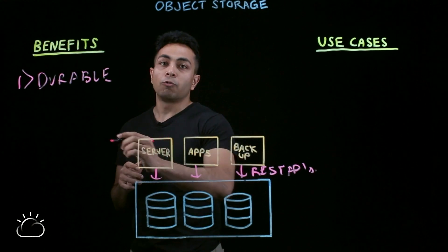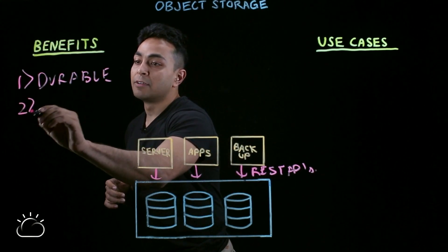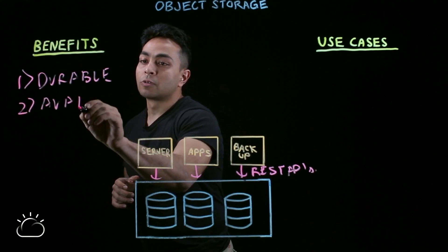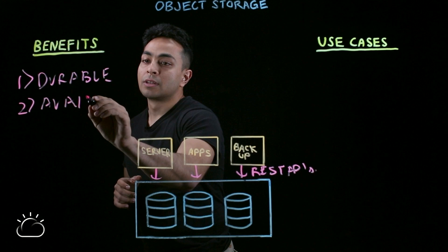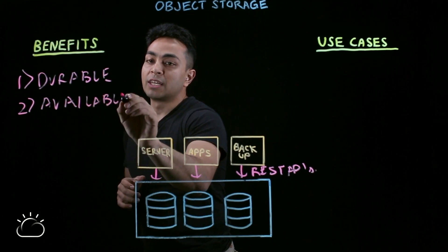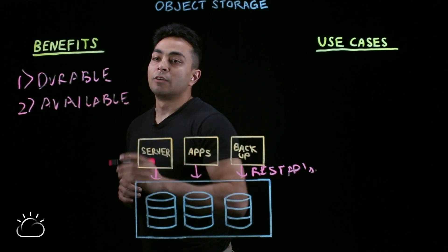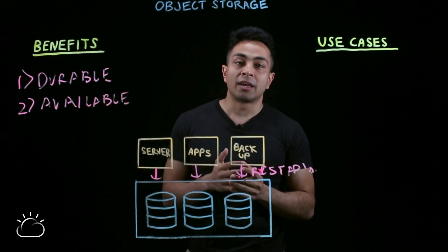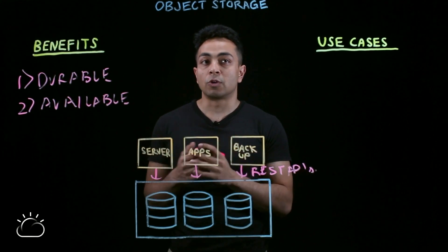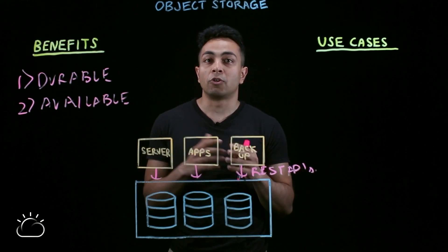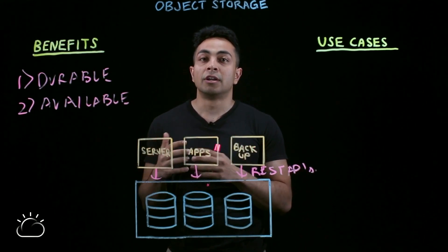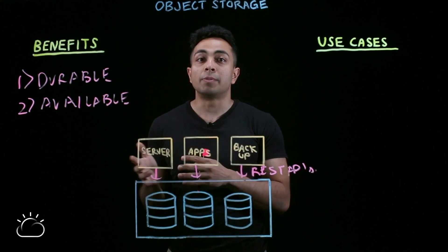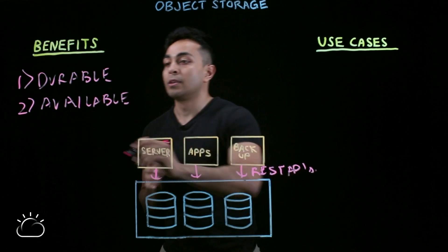The second benefit I'd like to talk about is availability. Object store systems are accessible over REST APIs, which means they're highly available. And if a single server goes down, you don't have to worry about not being able to access the object store and read or write data from it.